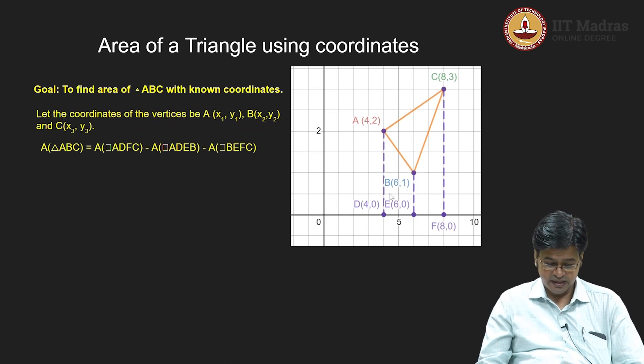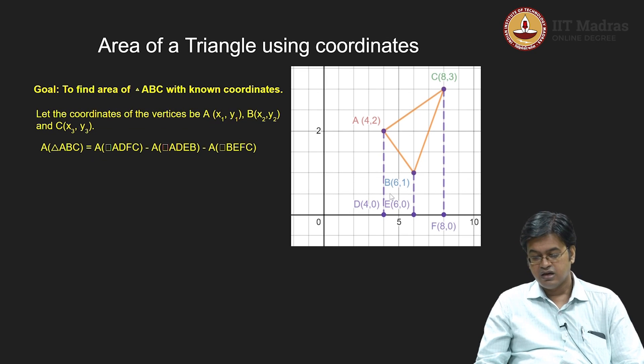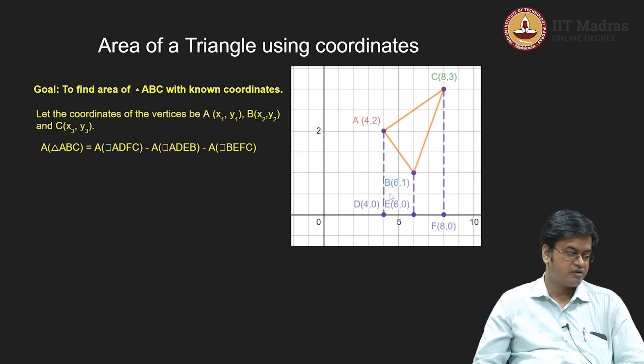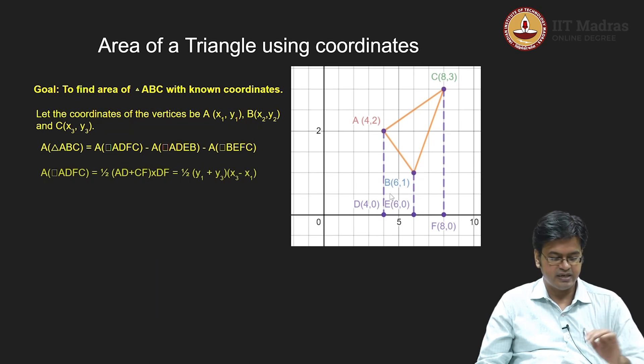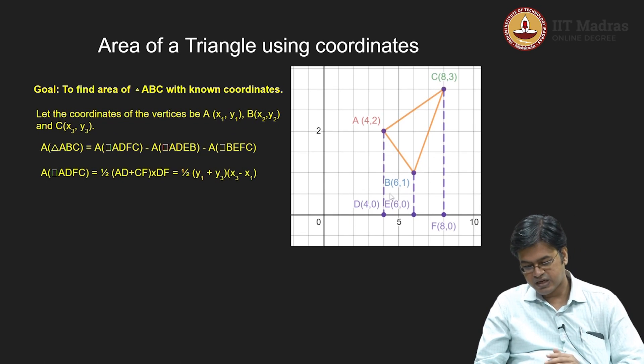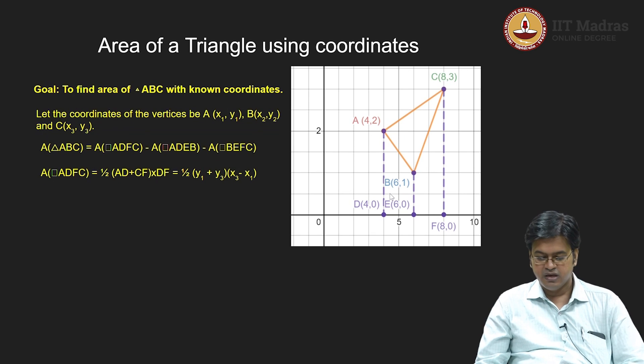Now, do I know how to find the area of trapezium? Yes, I know. The formula is half times sum of parallel sides into the height of the trapezium. We need to quantify how these quantities will be calculated. Let us consider trapezium ADFC. If I consider trapezium ADFC, then what are the parallel sides of this trapezium? Side AD and side FC or CF, right?